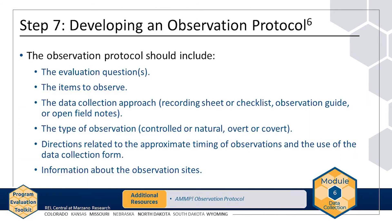The observation protocol should include information from steps 1 through 6. First, include the evaluation question or questions you want to answer so that observers know the purpose. Include information about items to observe, the data collection approach to use — recording checklist, observation guide, or open field notes — and the type of observation, controlled or natural, overt or covert. Also include directions related to the timing of observations and use of the data collection approach, as well as information about the sites for the observations. An example AMP observation protocol is available on the Resources page of the website.